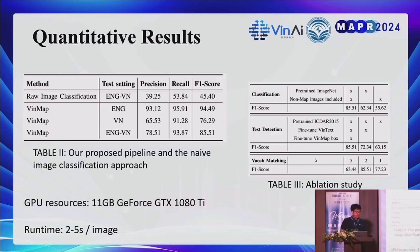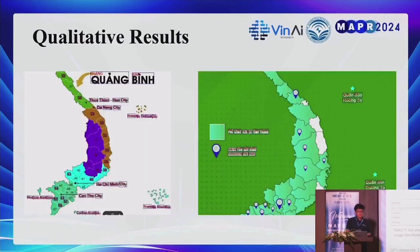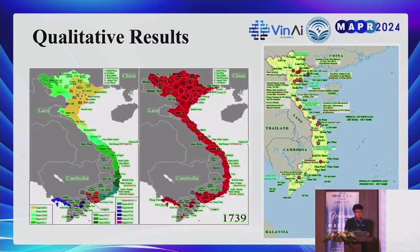The resources used for training and testing employ a single 11GB GeForce GTX 1080, with a runtime of roughly 2 to 5 seconds per image. We show qualitative results containing the detection and recognition of text in map images. The model can detect mostly all text in the map images and recognize it very well, even when the images are multi-resolution and contain a lot of noisy text.